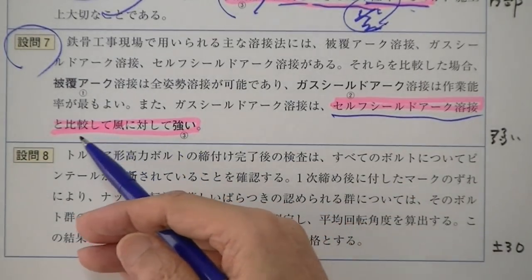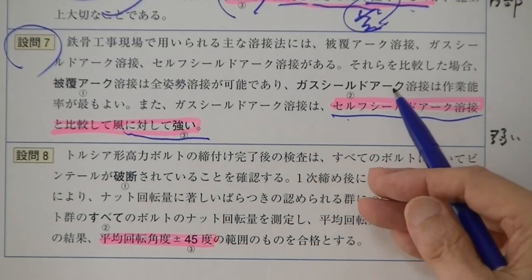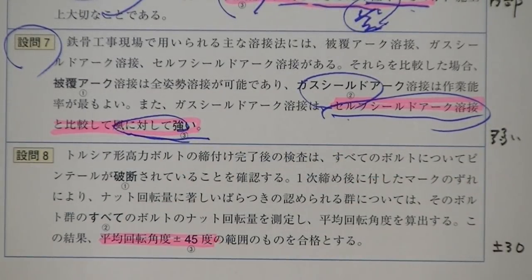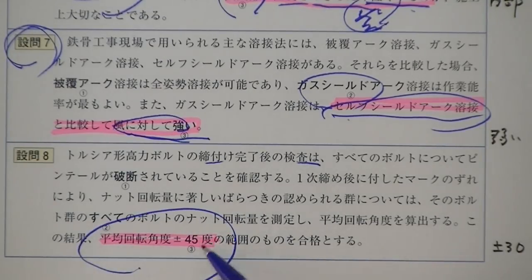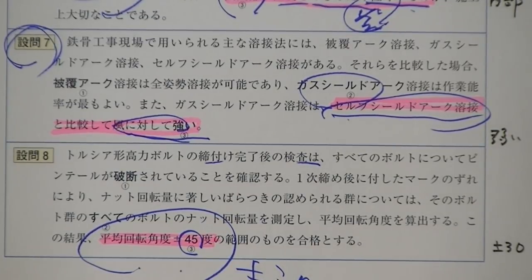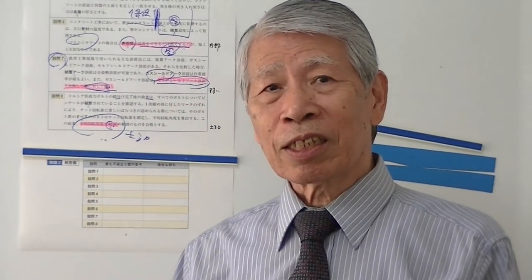7番目の鉄骨溶接では風速2メートル以上のときガスシールドアークはできませんが、セルフシールドアークはできます。ただしセルフシールドアークはヒュームという悪いガスが出てきます。風に強いのがセルフシールドアーク、風に弱いのがガスシールドアーク、この関係をしっかり覚えてください。8番目のトルシア型高力ボルトの締め付け検査では平均回転角に対してプラスマイナス30度の範囲に収まっているものが合格です。こういったところをしっかり学習して完全に理解していただければありがたいと思います。